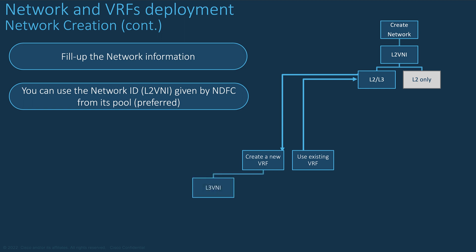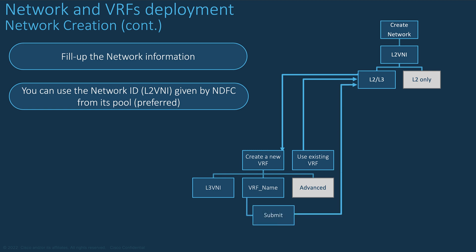Either you create a new VRF or reuse an existing one. If you need to create a new VRF, you can leave NDFC to provide the next Layer 3 VNI and VLAN ID from its pool. Give a name for the VRF or use the one given by NDFC. If you are an expert, you can always go to the Advanced tab. Your VRF has been created. You can return to the setting of the network.